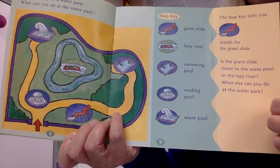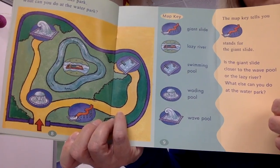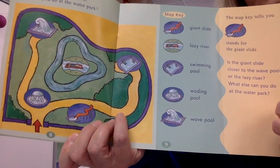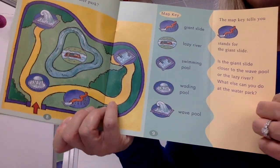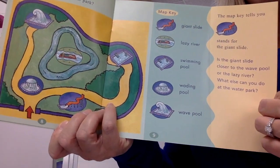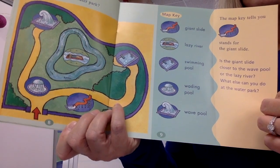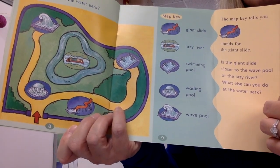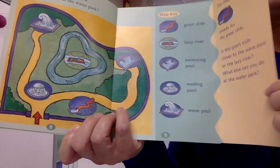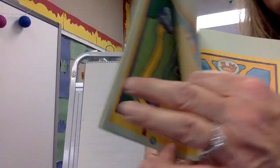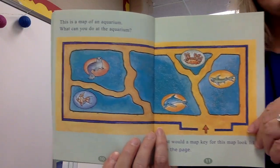The map key tells you that that slide looking thing stands for a giant slide. Is the giant slide closer to the wave pool or the lazy river? What else can you do at the water park? Well, there's lots of things you can do. We know that from going to our own water parks. And the map shows you too.